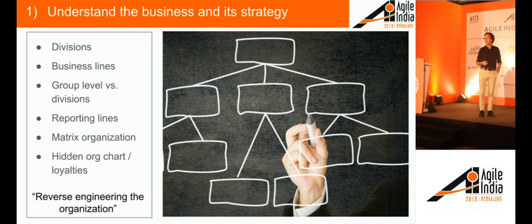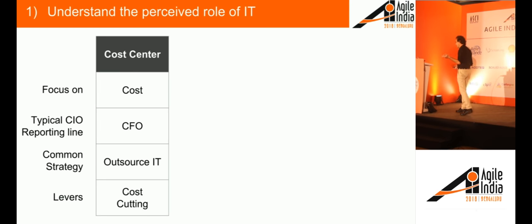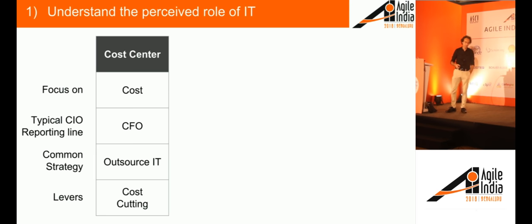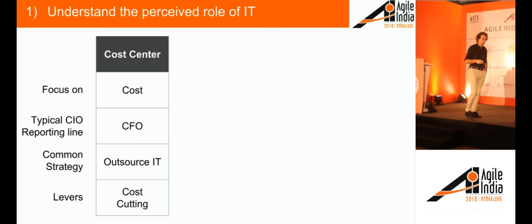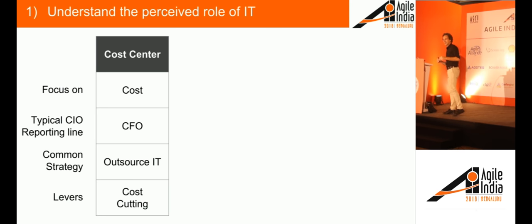I call this basically reverse engineering the organization. As architects we're pretty good at this — we can understand the structure of systems. In this case it's just not a technical system, it's an organizational system. It might seem very far from our daily job, but your brain is actually pretty well equipped to follow this kind of logic. The last important thing at the top of the value chain is understanding how IT is embedded into the rest of the organization. Usually IT ends at the CIO — the chief information officer — who has all the IT budget.